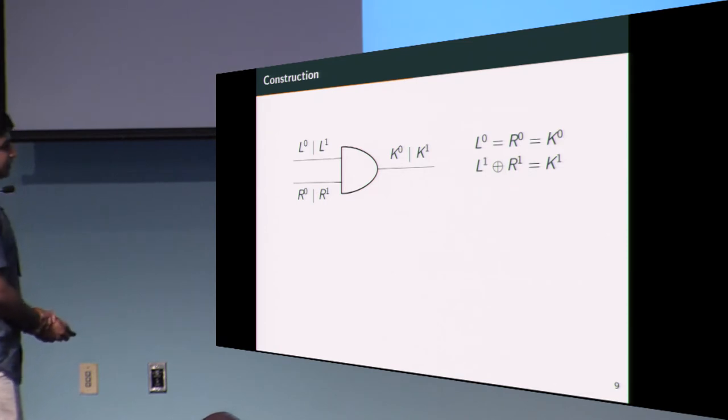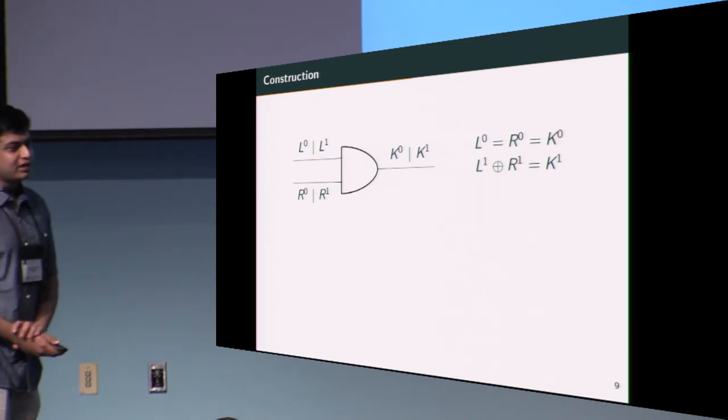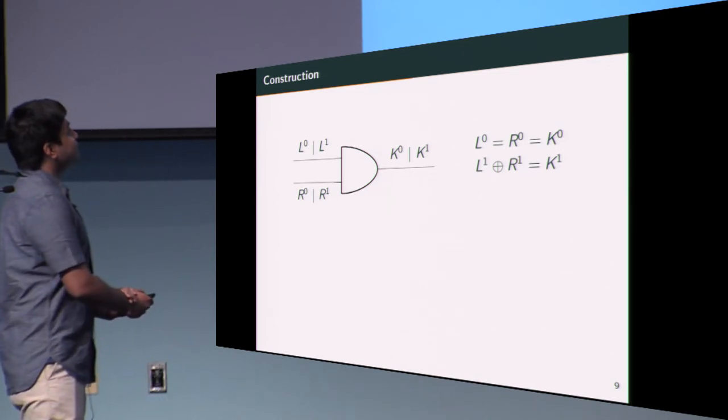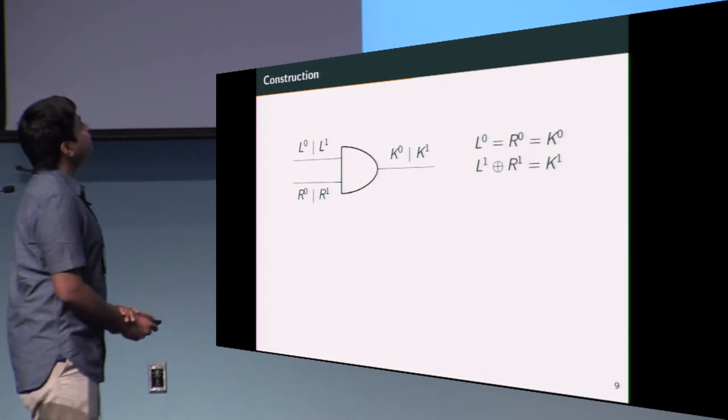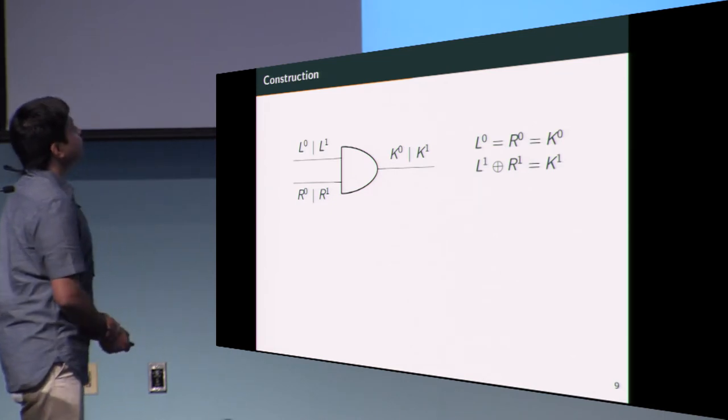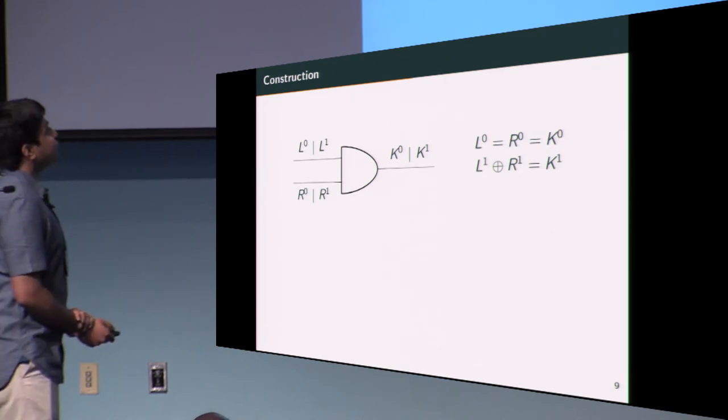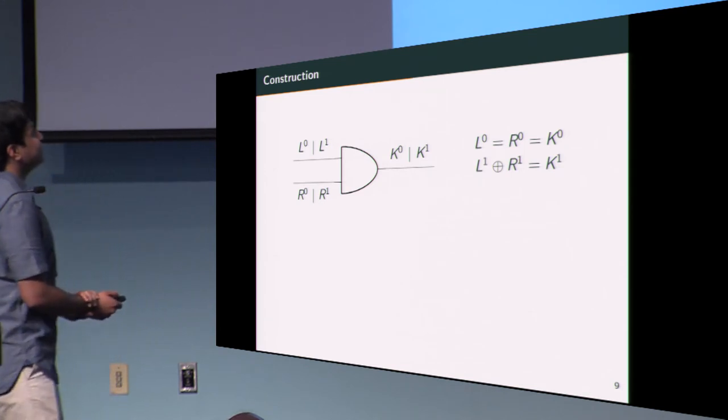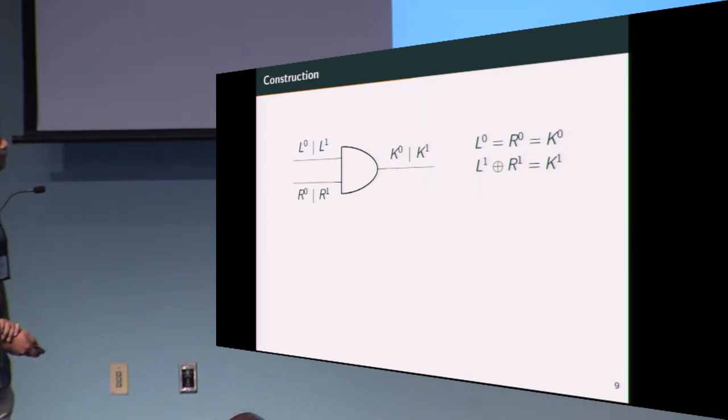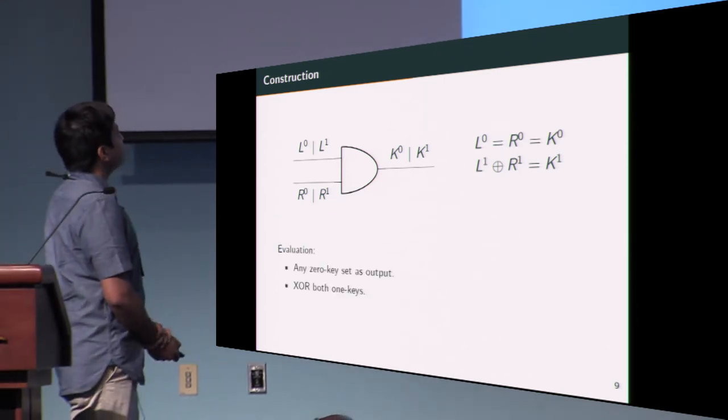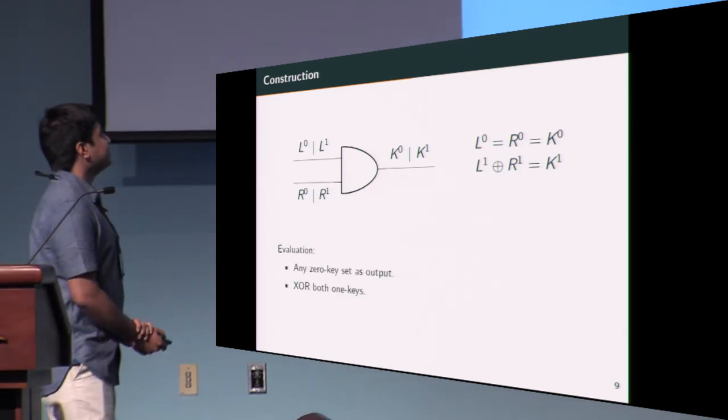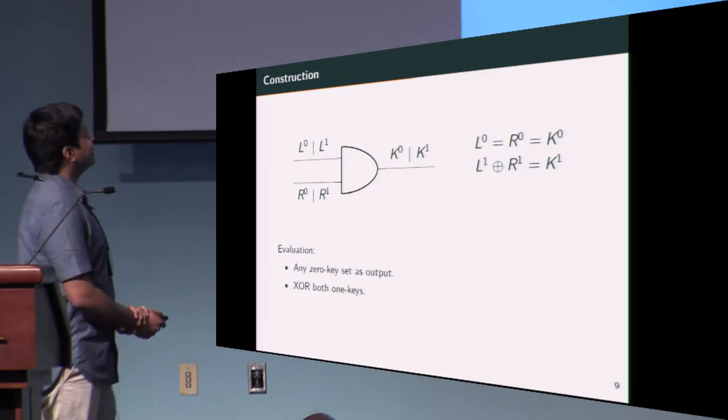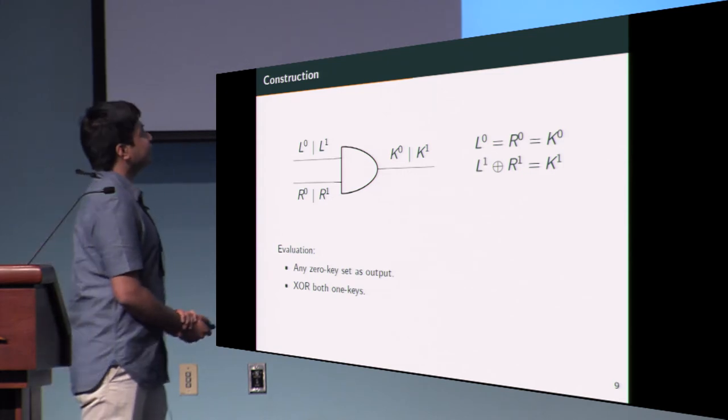This, in a nutshell, is our core construction for garbling an AND gate in the privacy-free setting. All the zero keys are the same: L0, R0, and K0 are essentially the same value. We maintain that K1 is additively secret shared to produce the input one keys L1 and R1. Evaluation is quite straightforward: an evaluator who has a zero key can directly copy that and set it as his output key, and an evaluator who has only one keys XORs them in order to get the output key.